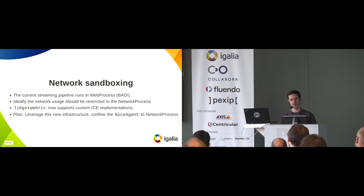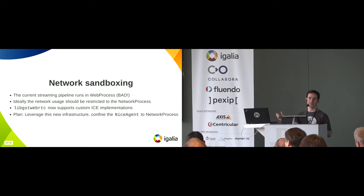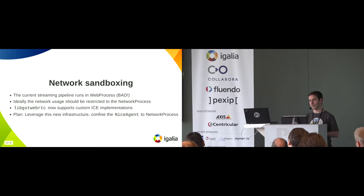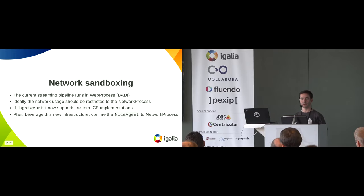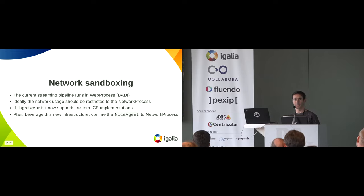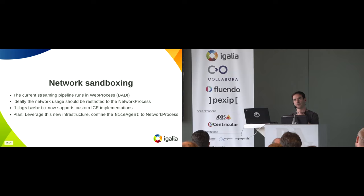Regarding network sandboxing: WebKit is multi-process. We have a web process that does DOM and JavaScript handling, and another process called network process responsible for network operations. Right now all the WebRTC pipelines are running from the web process, which is not ideal for security. The idea is to move network handling into the network process. LibGST WebRTC recently gained the capability to have custom ICE implementations, so hopefully we'll leverage that to sandbox network usage to the network process. Another option could be to customize the ICE agent — we looked at that as well and we're not sure yet which approach to use.